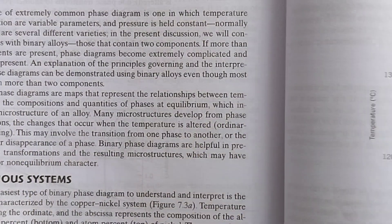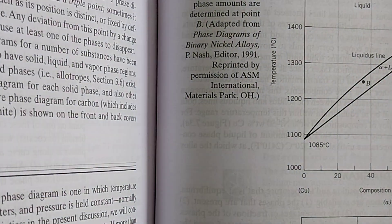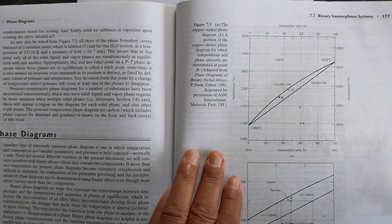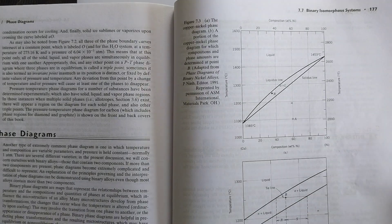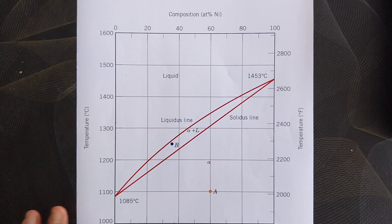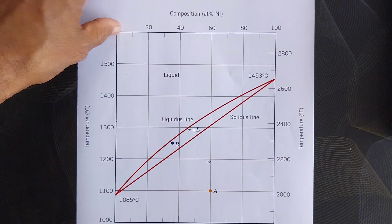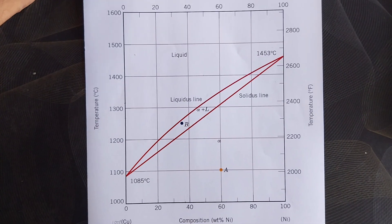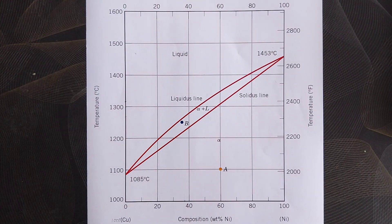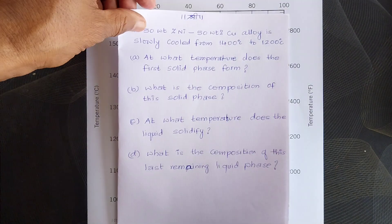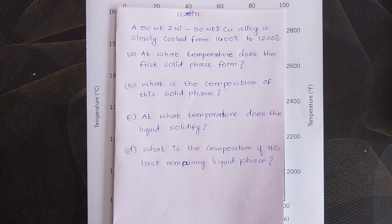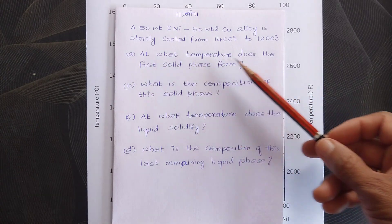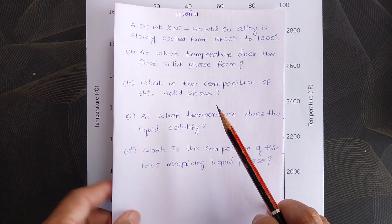In order to work on this, we will need to refer to a phase diagram on page 177 of this book — figure 7.13. I have with me a magnified form of this figure for better graphical analysis so that we can do some geometry work on it. The question, as I mentioned, is: a 50 weight percent nickel, 50 weight percent copper alloy is slowly cooled from 1400 degrees Celsius to 1200 degrees Celsius. The first part of the question asks: at what temperature does the first solid phase form?